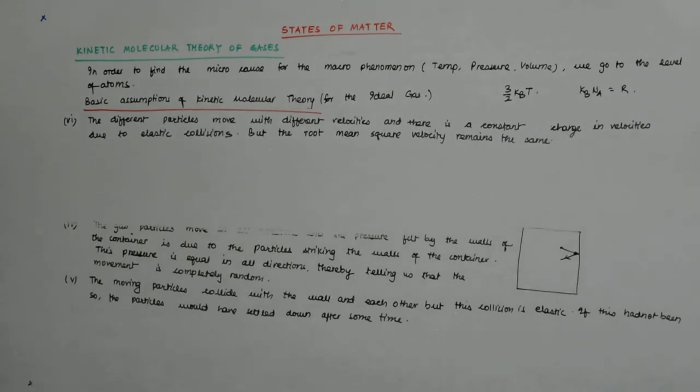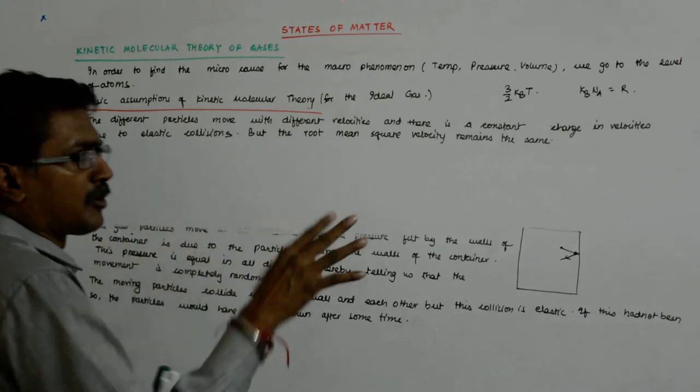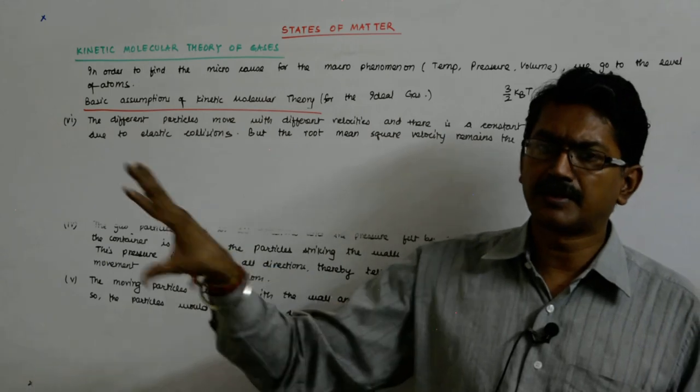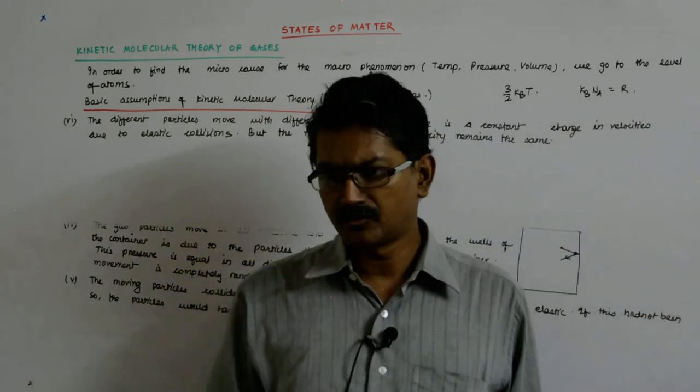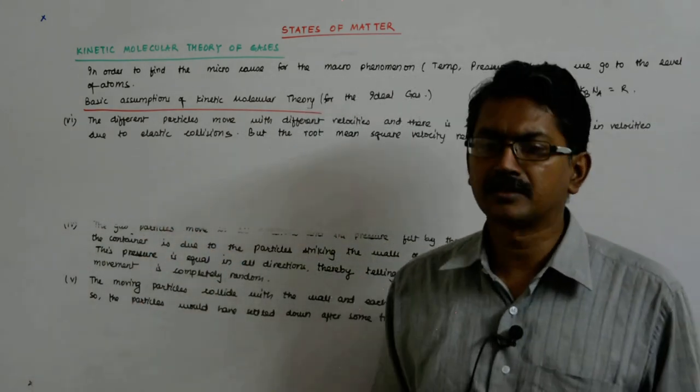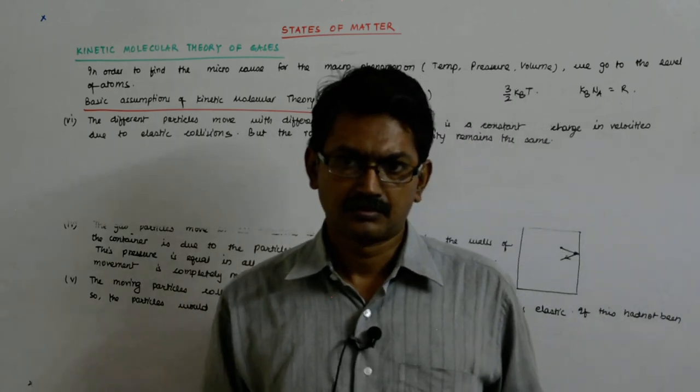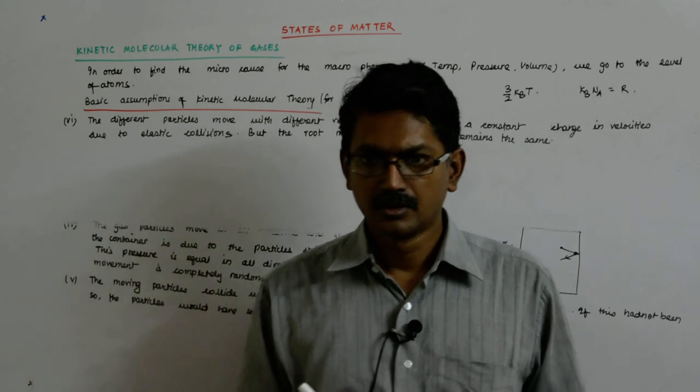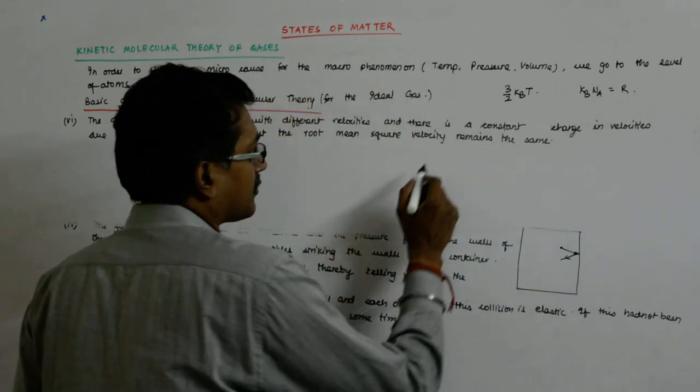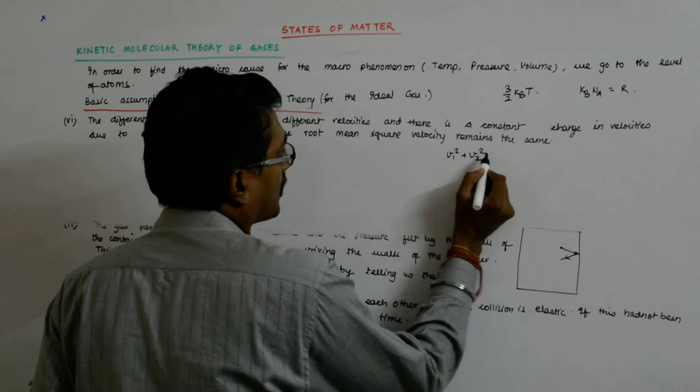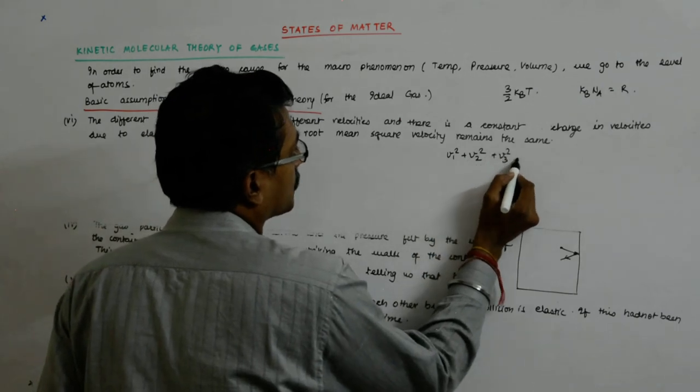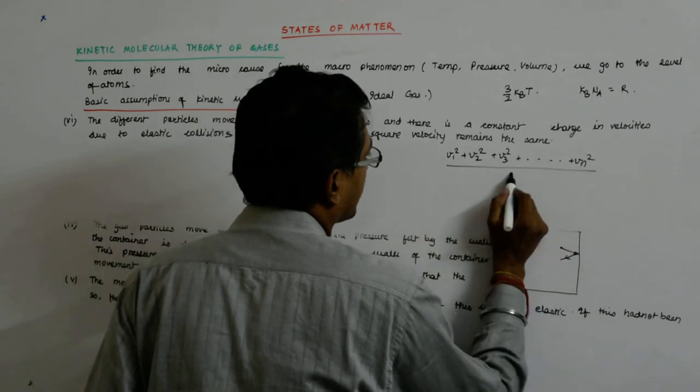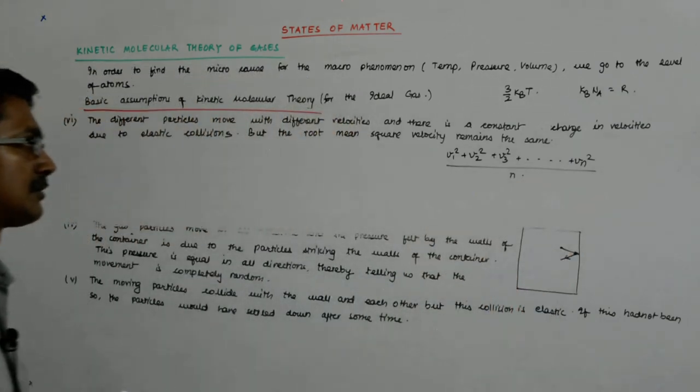It is actually the sum of the squares. You square the velocities, sum them up, and then take the root of that. You take the mean, then the root—because you have squared the velocity: v1 square plus v2 square plus v3 square up to vn square, then divide by n and take the root of it.